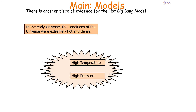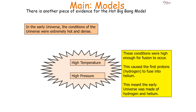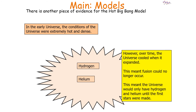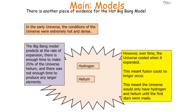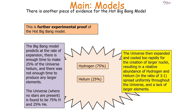The final piece of evidence for the hot Big Bang model is the abundance of hydrogen and helium. In the early universe, conditions were extremely hot and dense — high enough for fusion to occur, causing the first protons (hydrogen) to fuse into helium. The Big Bang model predicts that at the rate of expansion, there was only enough time to make 25% of the universe helium, and not enough time to produce any larger elements. A universe where no stars are present is found to be 75% hydrogen and 25% helium. The universe then expanded and cooled too rapidly for the creation of larger nuclei, resulting in a relative abundance of hydrogen and helium spread uniformly throughout the universe — consistent with observation.